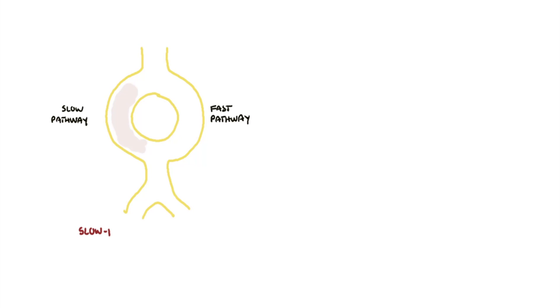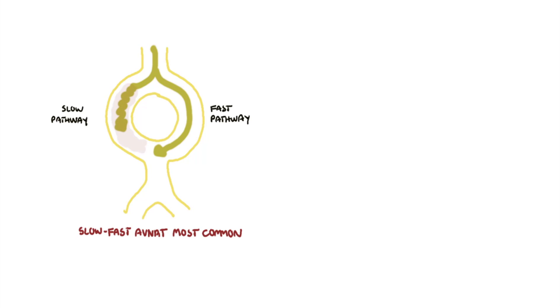There are two main types of AVNRT. The slow-fast AVNRT accounts for 90 percent of AVNRTs. The impulse travels slow along the slow pathway and fast along the fast pathway. The impulse traveling down the fast pathway will eventually excite cells at the bundle of His, but also in the slow pathway as well. The fast impulse will thus cancel out the slow impulse.